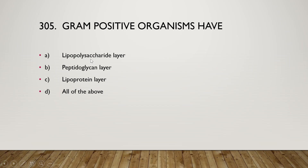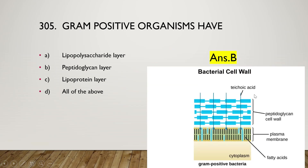The next question: gram positive organisms have a lipopolysaccharide layer, peptidoglycan layer, lipoprotein layer, or all of the above. The right answer is option B — peptidoglycan layer is present in gram positive organisms in their cell wall. Gram positive bacteria have a thick layer of peptidoglycan outside the plasma membrane.